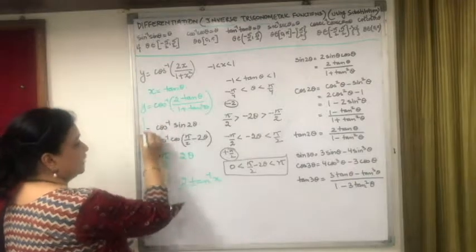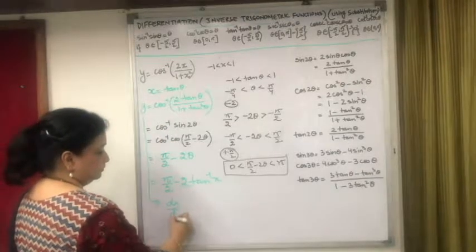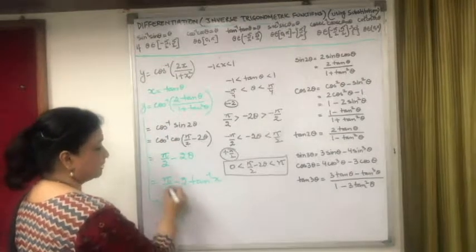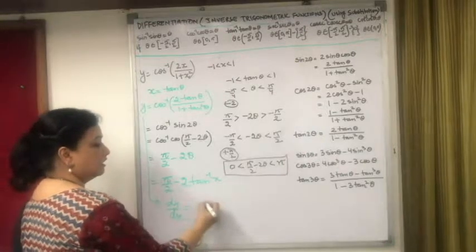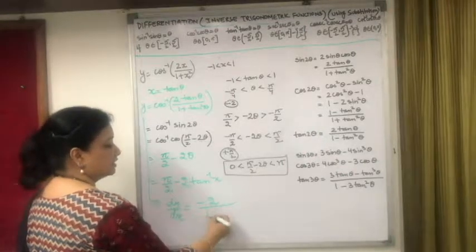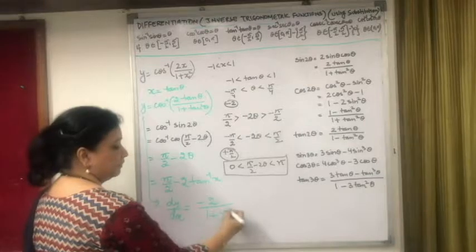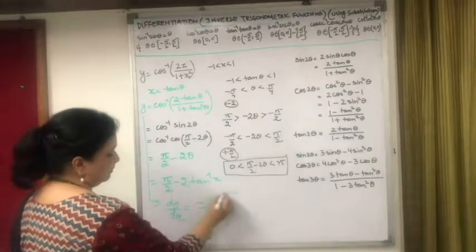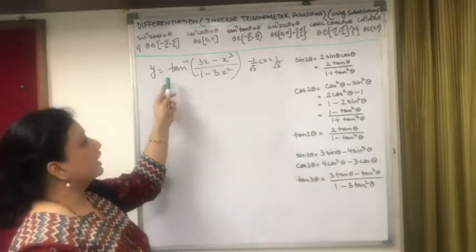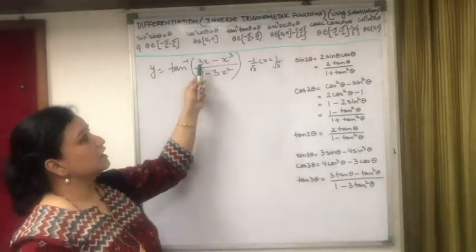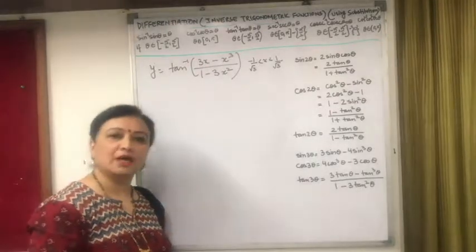Therefore dy/dx = 0 - 2 · 1/(1+x²) = -2/(1+x²).